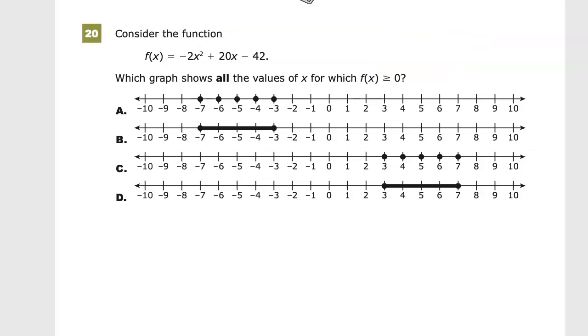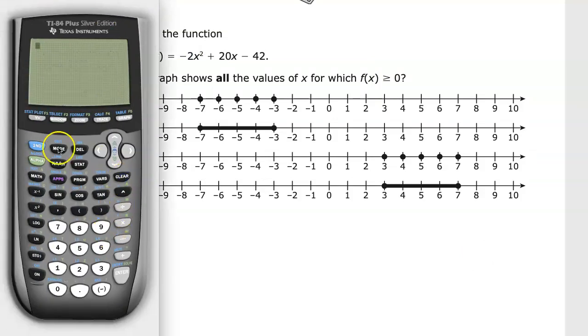One of the big things that can cause an error when typing into the calculator is using negative 2 versus minus 2. It's negative unless it's between terms. Here it's a minus, but otherwise it's negative. For this one, it's minus 42 because it's between two terms.